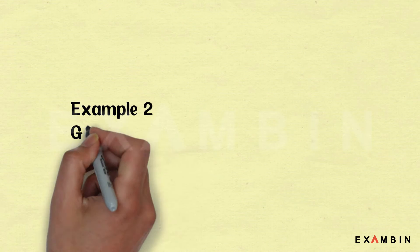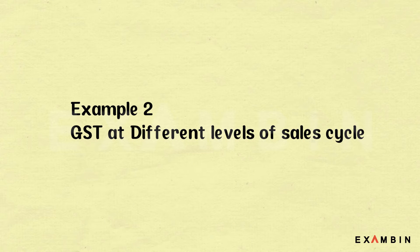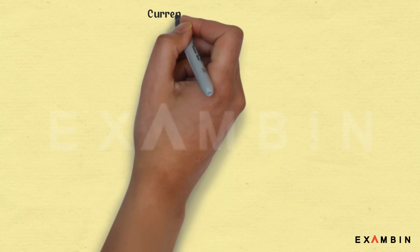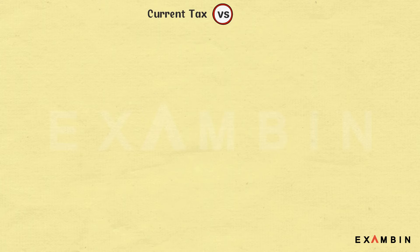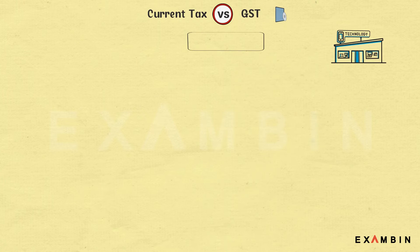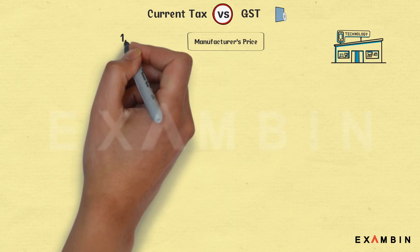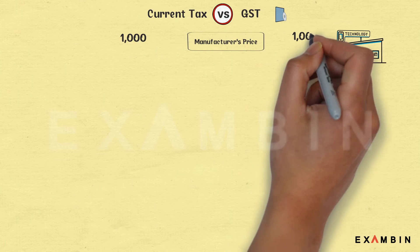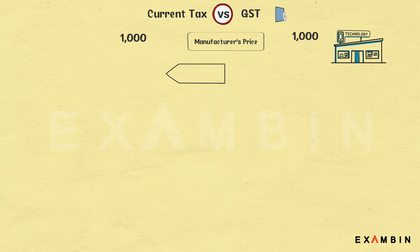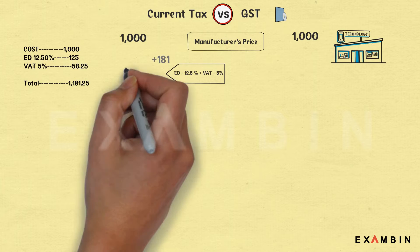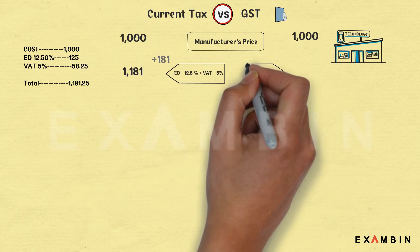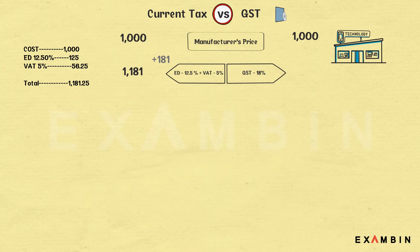Now let us see the second example — a classic example of a software production company pricing a product at one thousand rupees. In the present system, excise duty of 12.5% and VAT of 5% are added. The VAT is applied on the manufacturer price as well as on the excise duty component, giving a total of 1181 rupees. In the proposed GST system, a single tax of 18% gives 1180 rupees.